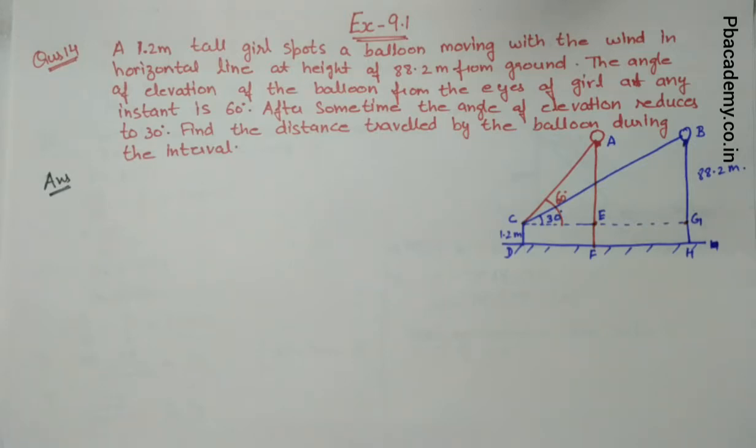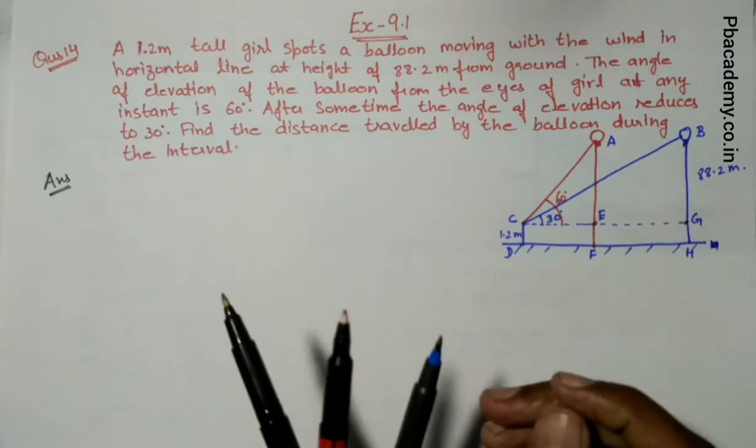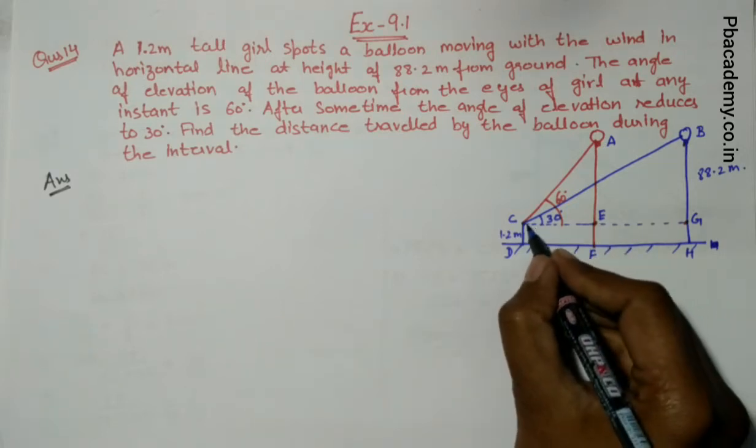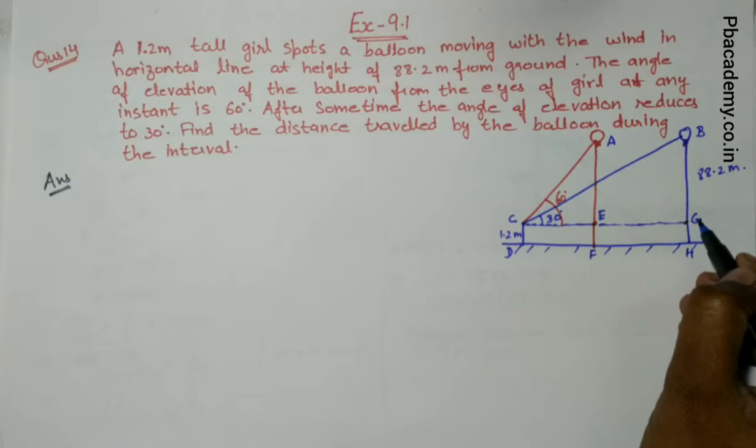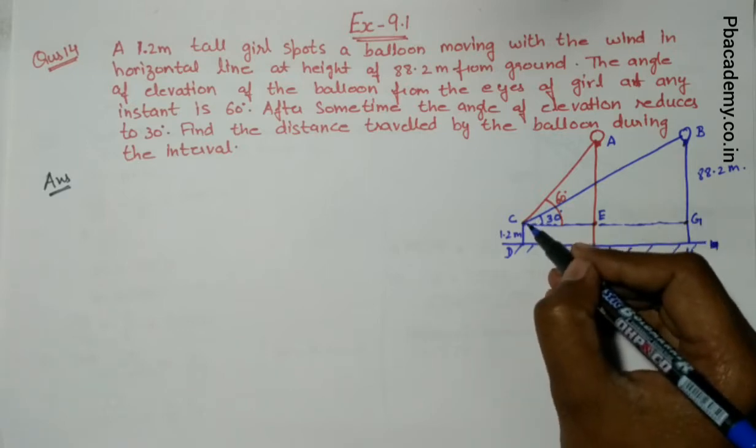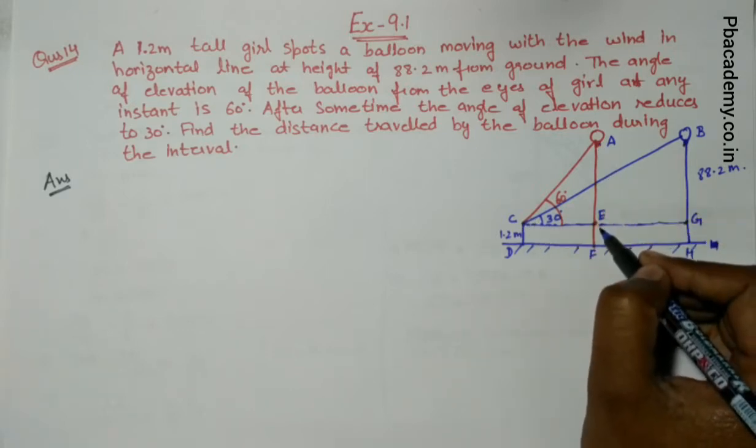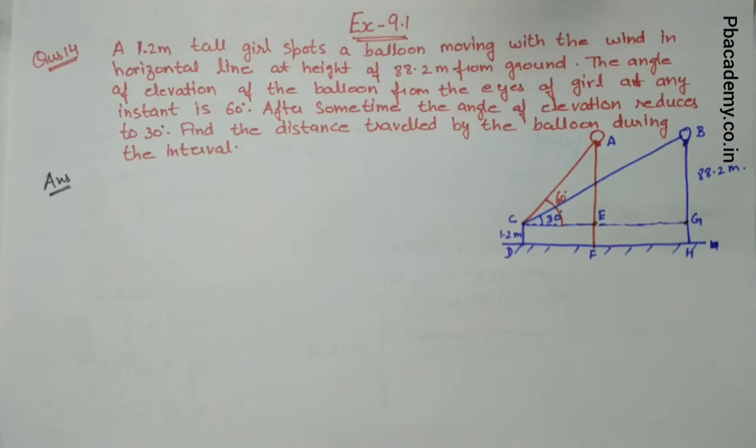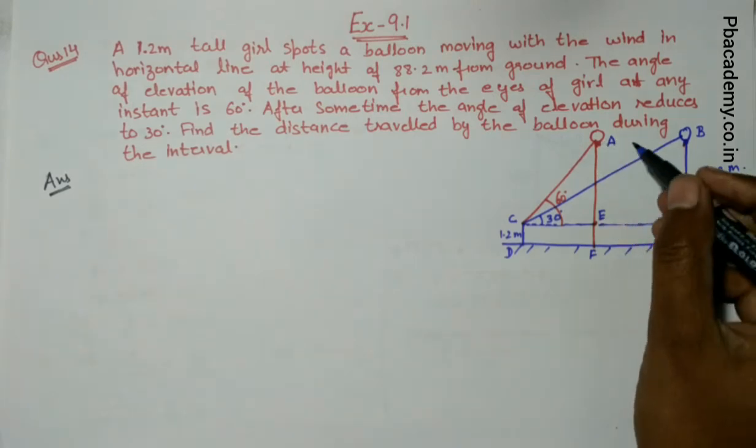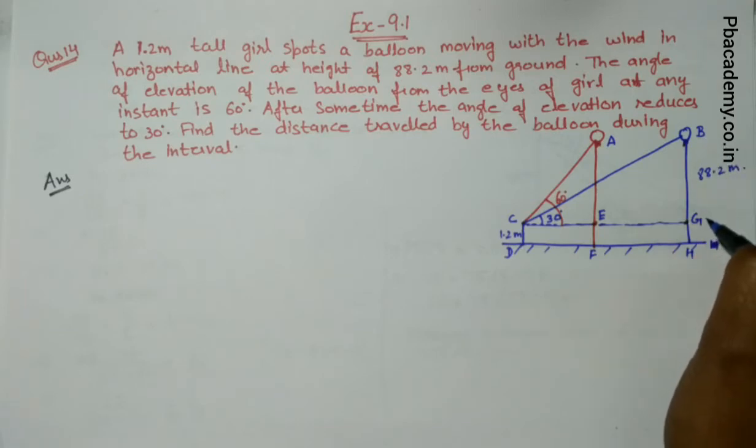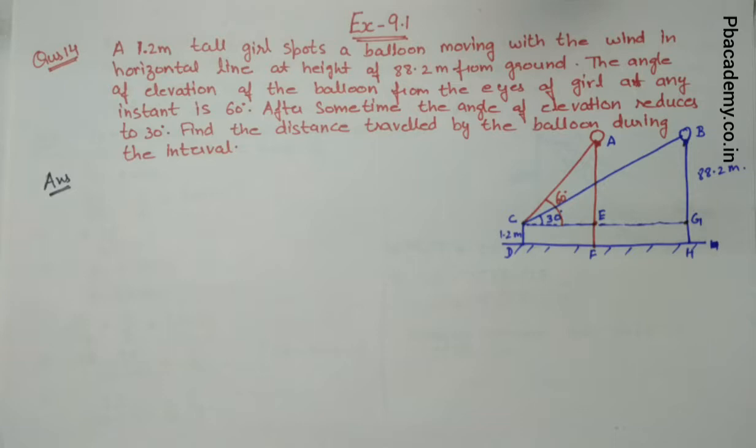To solve this question, we have two triangles. The first triangle is CBG and the second triangle is CAE. In both there is something common - the height of the balloon. So AE will be equal to BG. On this basis we will solve this question.